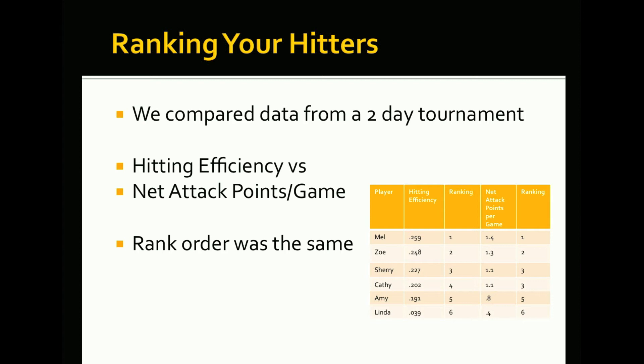You'll notice on the table on the right that the rank order of the players was actually the same — Mel hit .259 and the net attack points per game was 1.4 at the highest, followed by Zoe and so forth. These rank orders won't be precisely the same in both cases but they're very close. The key message is that all you're trying to do is rank your best hitter to your worst hitter. This is a good proxy for hitting efficiency without all the effort it takes to capture the data necessary to calculate hitting efficiency.